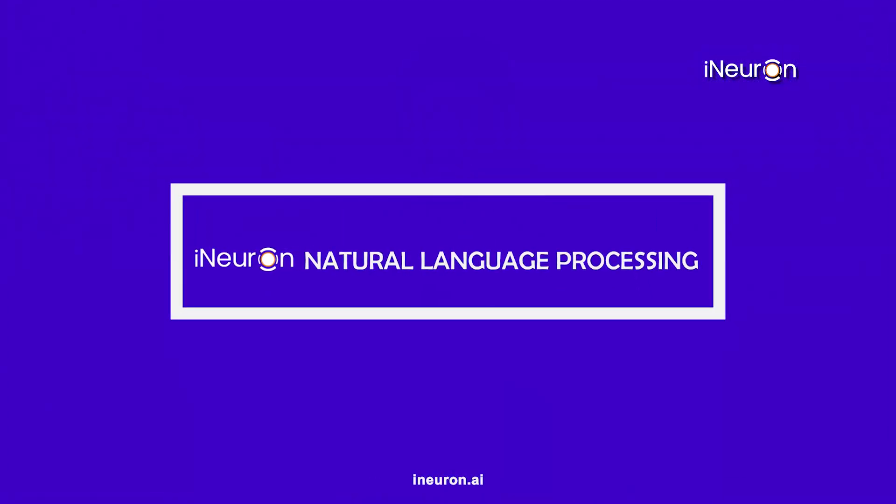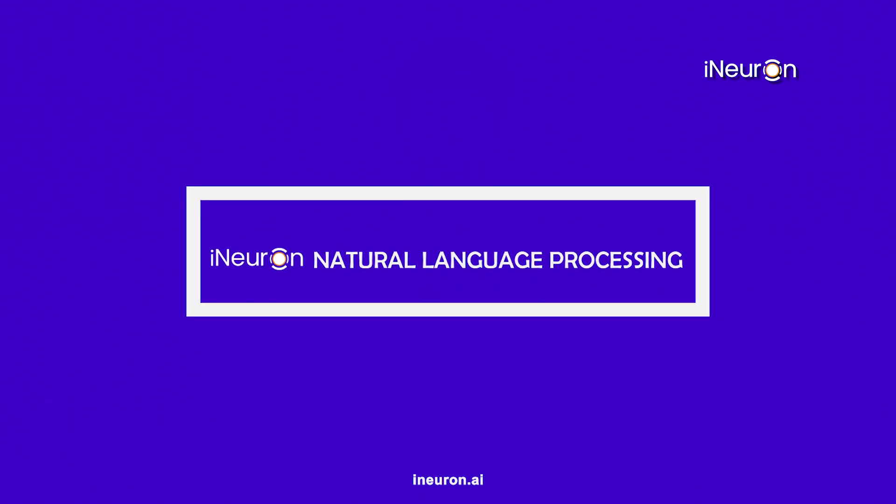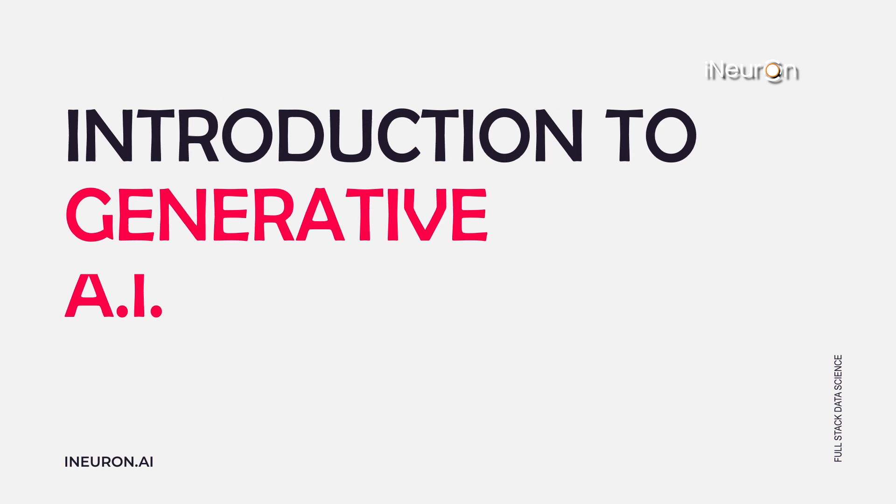Now once deep learning is completed then we are going to move to NLP. Natural language processing is actually very important especially with the advent of large language models in today's world. Models like ChatGPT, Claude and even Gemini Pro all use LLM and NLP concepts in the backend. So we want to make sure that we complete this very nicely and then start with our introduction to GenAI.